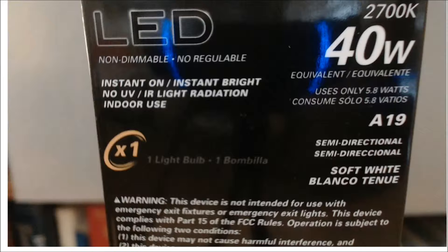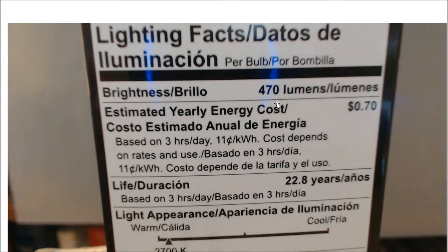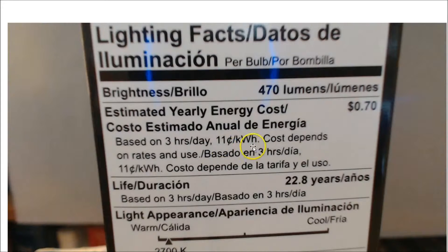Here's the container that the LED bulb came in. Again, it's a 40 watt equivalent, but it only uses 5.8 watts of energy — 5.8 joules per second. It says on the container that it costs 70 cents to use it for a full year at three hours per day — we want to verify that. We have three hours per day and 11 cents, assuming that's the rate per kilowatt hour.